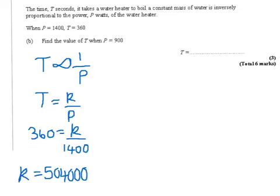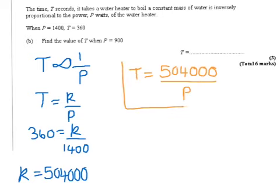Because the constant doesn't change, and t and p do, we write our new formula: t equals 504,000 divided by p. So that's our formula that we're going to use for the time and the power.